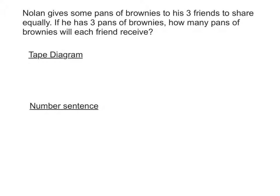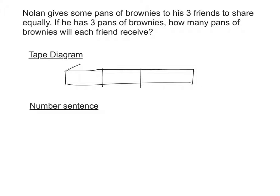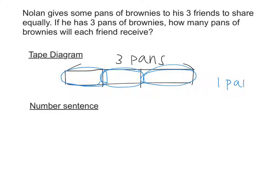Nolan has some pans of brownies to give to his three friends to share equally. If he has three pans of brownies and wants to share them with three friends, how many pans will each friend receive? Let's draw a tape diagram. He has three pans of brownies — first pan, second pan, third pan. We label this three pans of brownies, and he shares equally amongst three friends: one pan to each friend. Each friend receives one pan. The number sentence is: three pans divided by three friends equals one pan each.